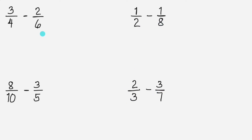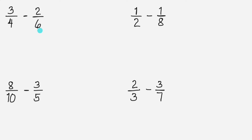Let's subtract the first example: 3 fourths minus 2 sixths. In subtracting fractions with different denominators, the first step is to get the least common denominator or LCD and change the fractions to similar fractions. To find the LCD, we can use any of the three methods: listing method, prime factorization, and continuous division. Or we can use some techniques to find the LCD.